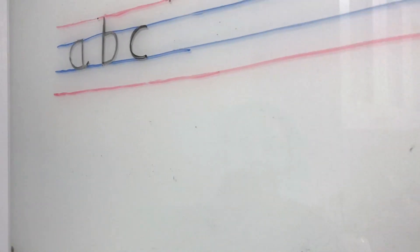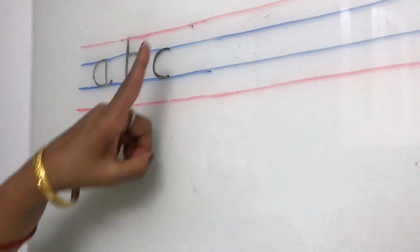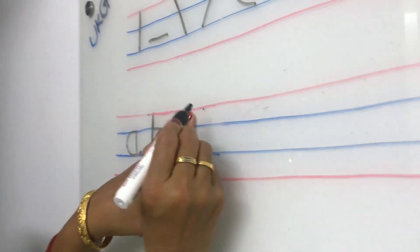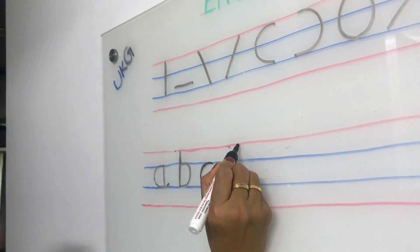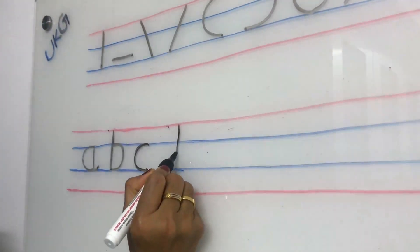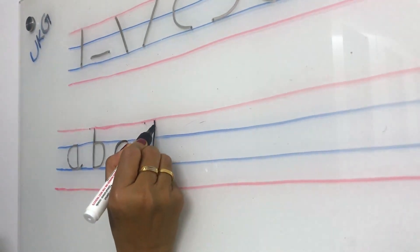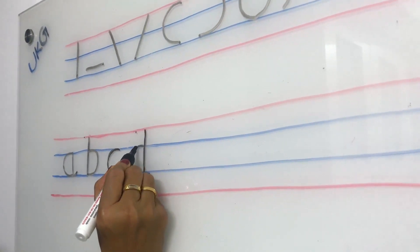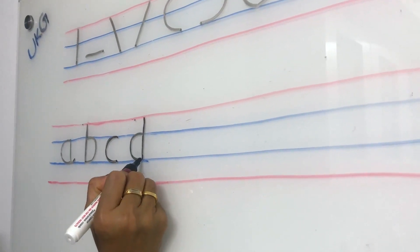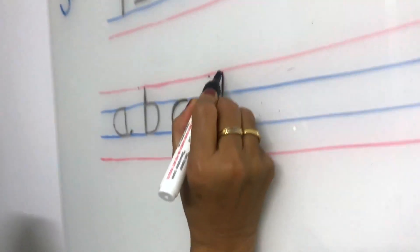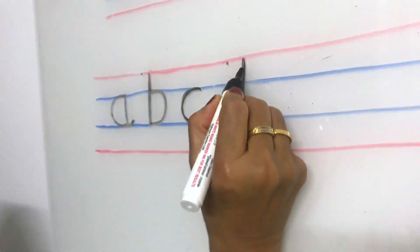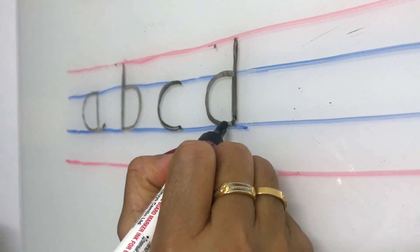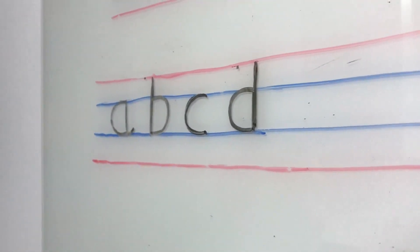Now we are writing small D. Give finger gap. Red line to blue line standing line, and left curve makes small D.